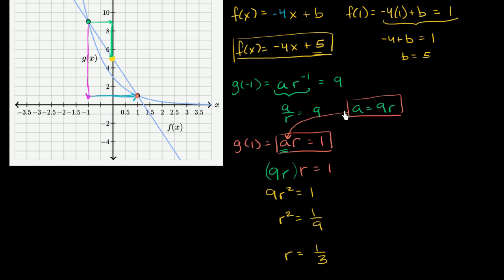And then we could substitute this back into either one of these other two to figure out what a is. We know that a = 9 times r, so 9 times 1/3, a = 3. So our exponential function could be written as g(x) = 3 times (1/3) to the x power. Or you could even write it like this, because order of operations would imply that you do the exponential first. Well, actually I'll write it like this again, just to make it clear. This isn't just 1 to the third power, this is 1/3 to the x power.